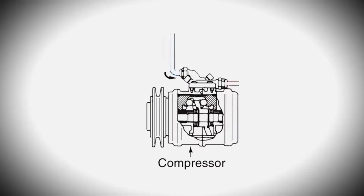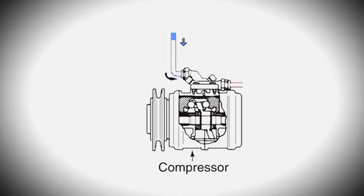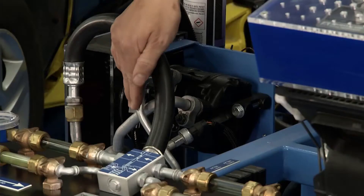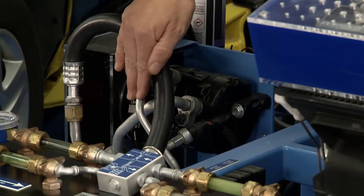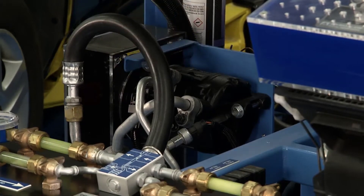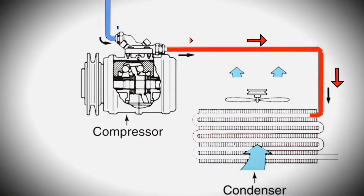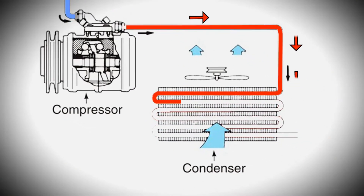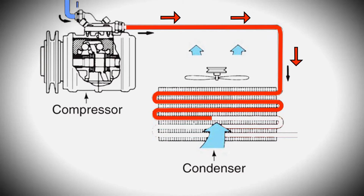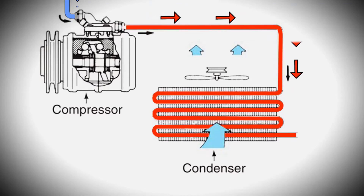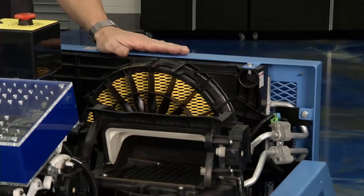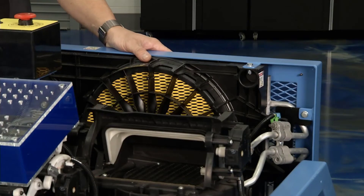It all starts right here at the compressor. The compressor is going to put out a high-pressure gas, and this is the hottest part of the system — if you were feeling this, it would feel really, really warm. What's going to happen is it's going to send that over to what's called a condenser, located in the front of the car. In the condenser, the refrigerant changes from a high-pressure gas to a high-pressure liquid.